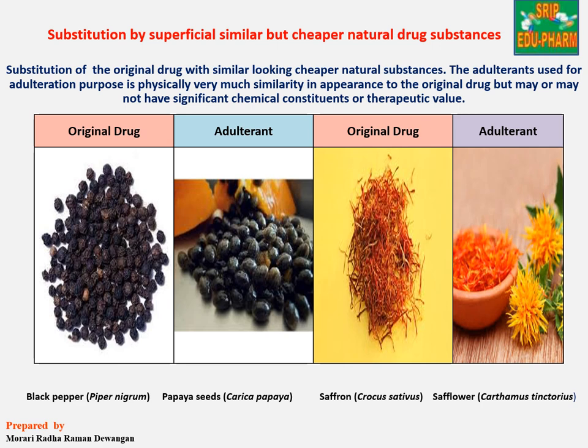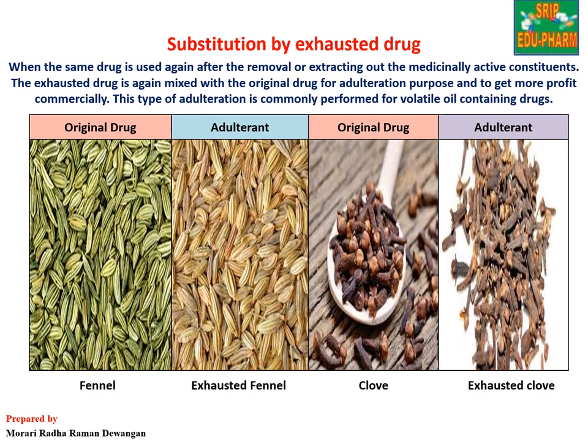For example, black pepper can be adulterated with papaya seeds, and saffron can be adulterated with sunflower petals. The next method is substitution by exhausted drug — in this type of adulteration, the drug that has already been used for the extraction process, i.e., the exhausted or waste material, is mixed with the original drug.